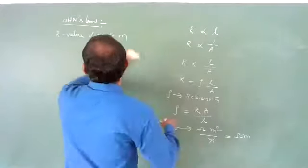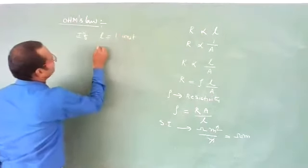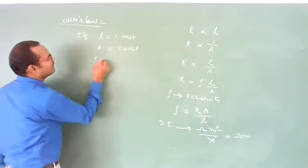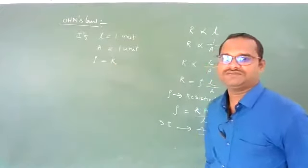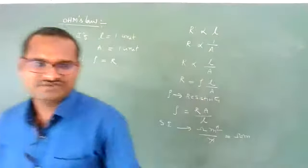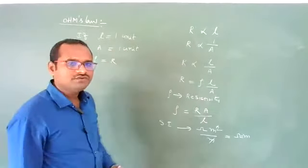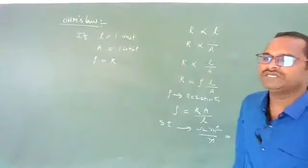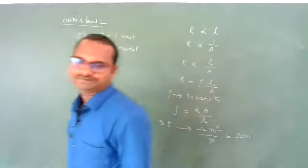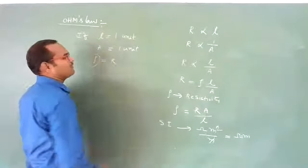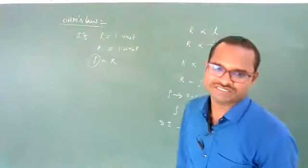Definition of resistivity: if the length of the wire is one unit and area of cross-section is also one unit, then ρ equals R. So resistivity of a material is equal to the resistance of the wire when its length and area of cross-section are both one unit. Resistivity is a fixed value for a particular material at constant temperature.